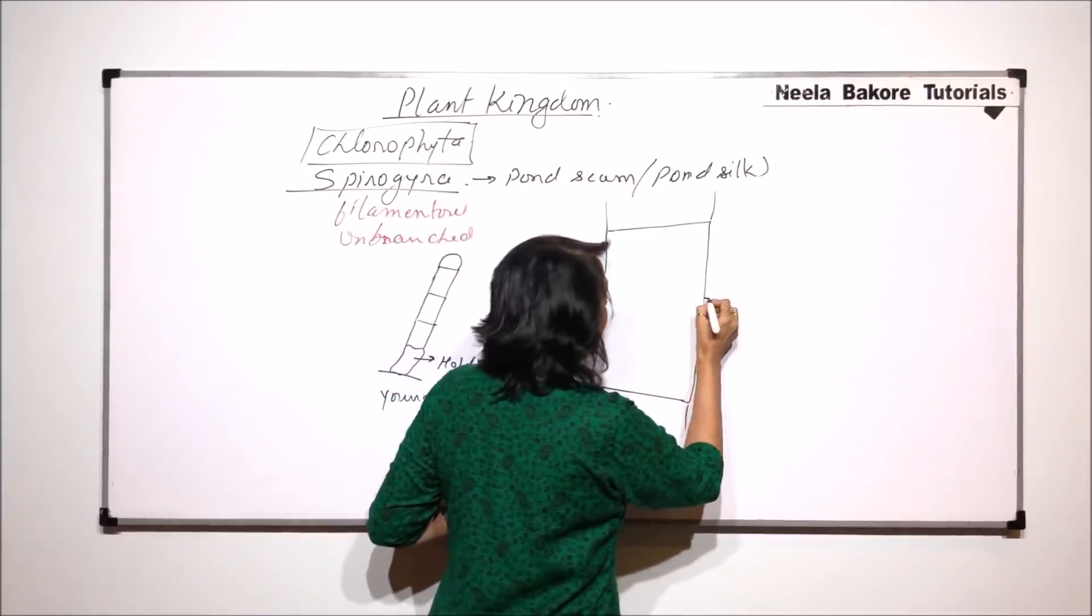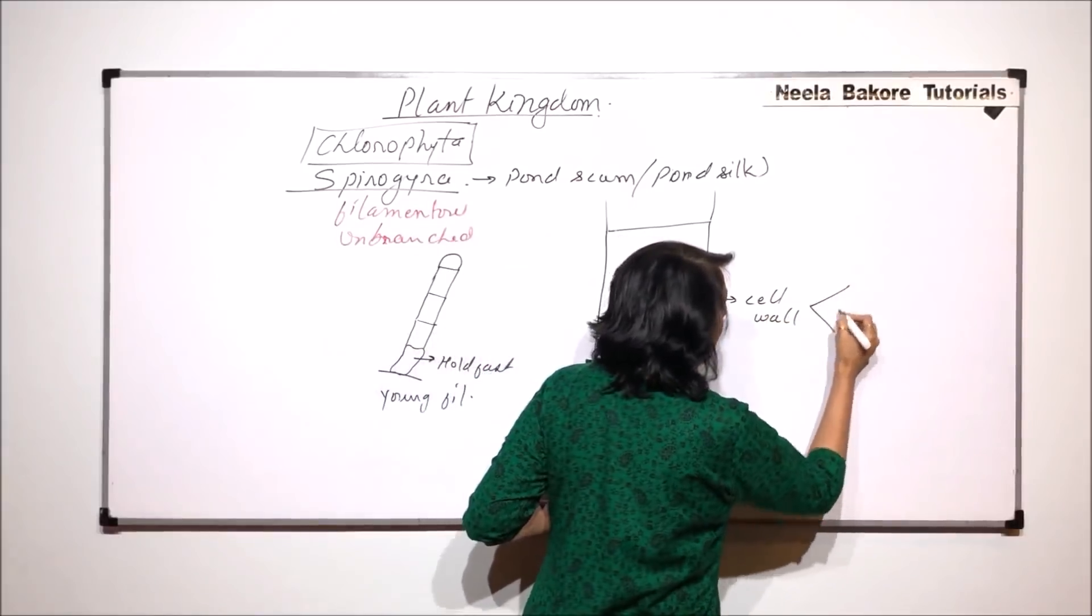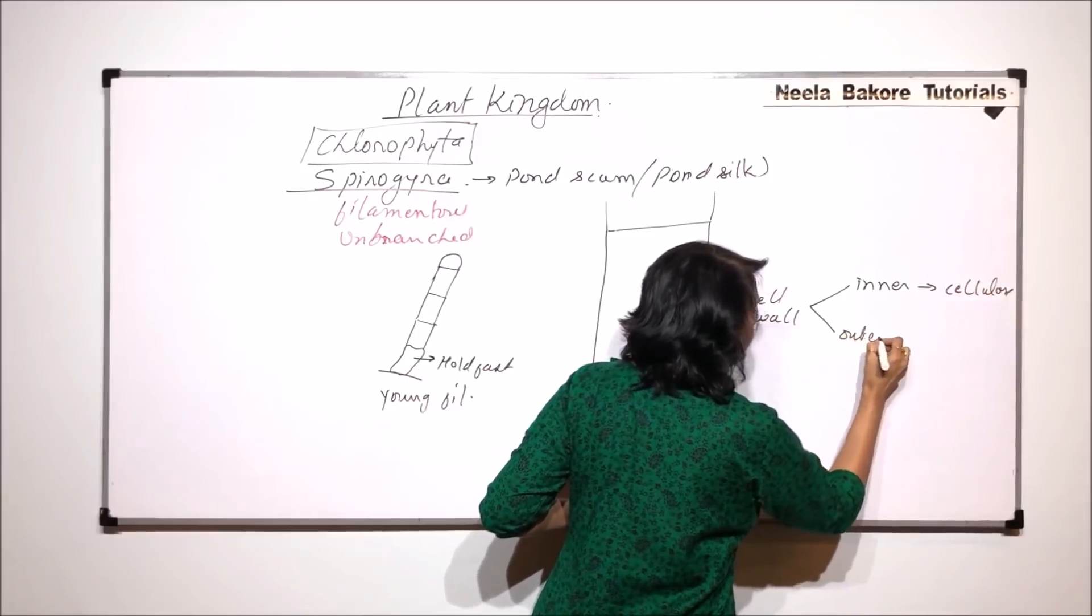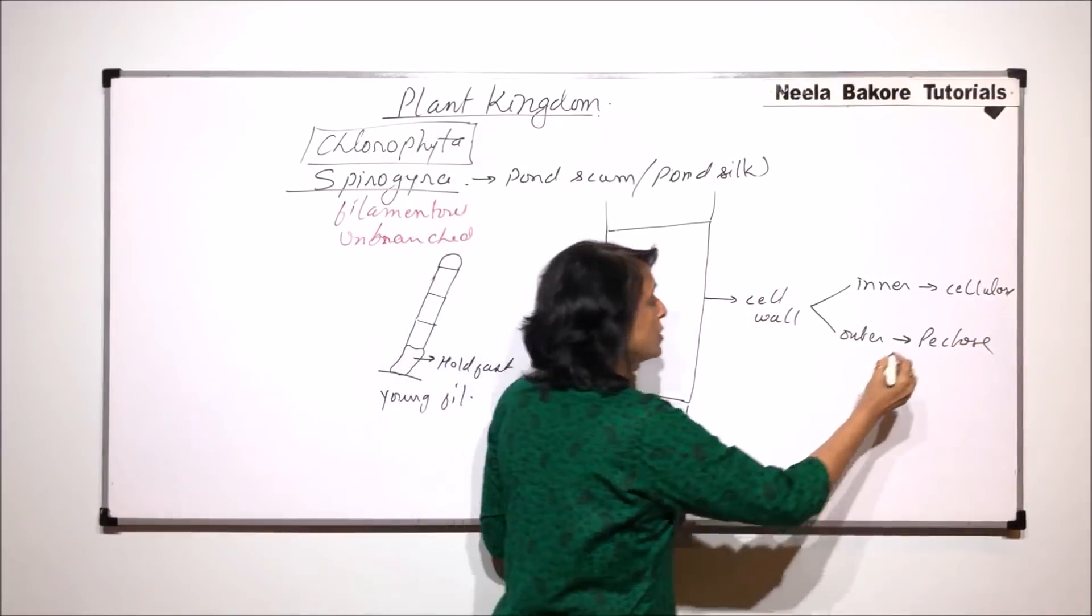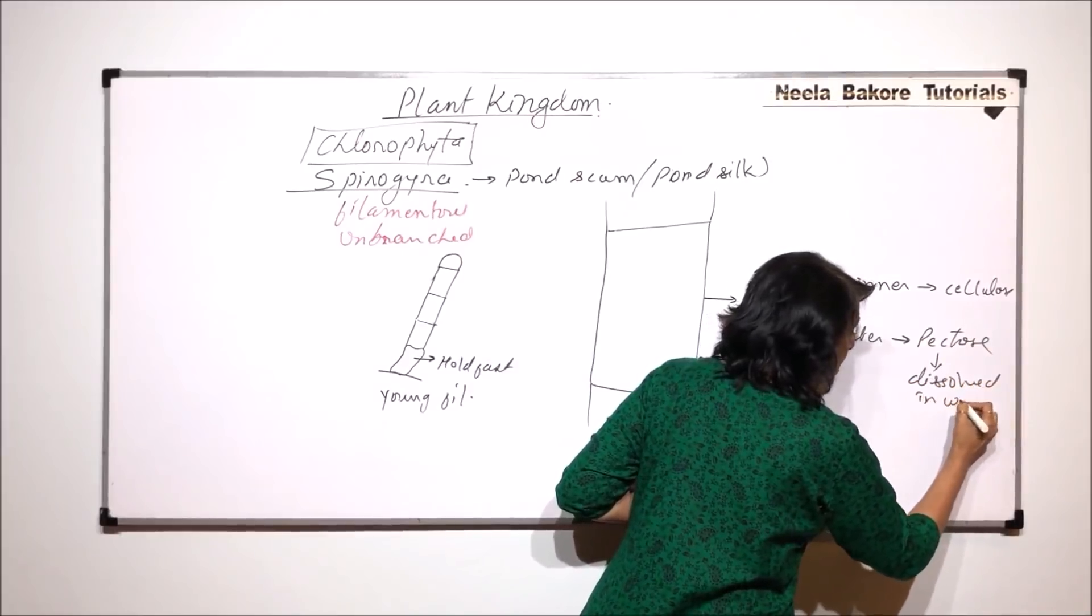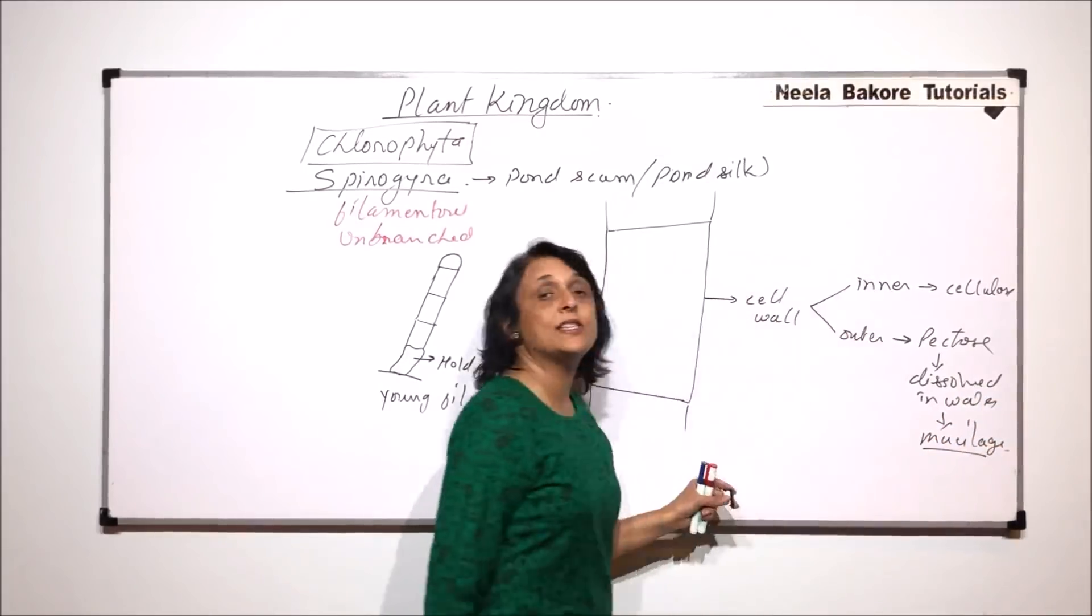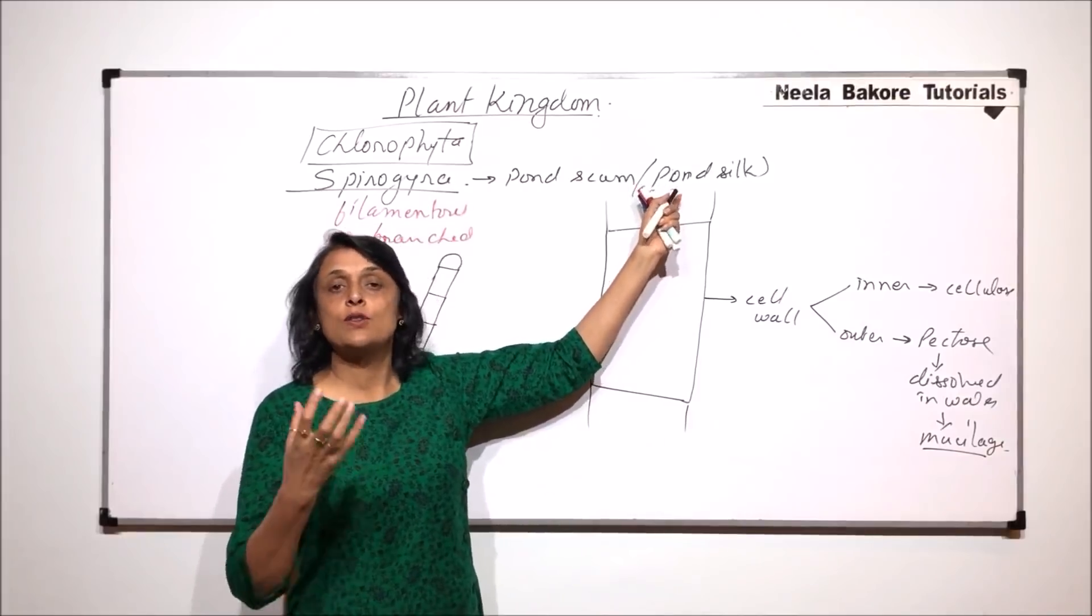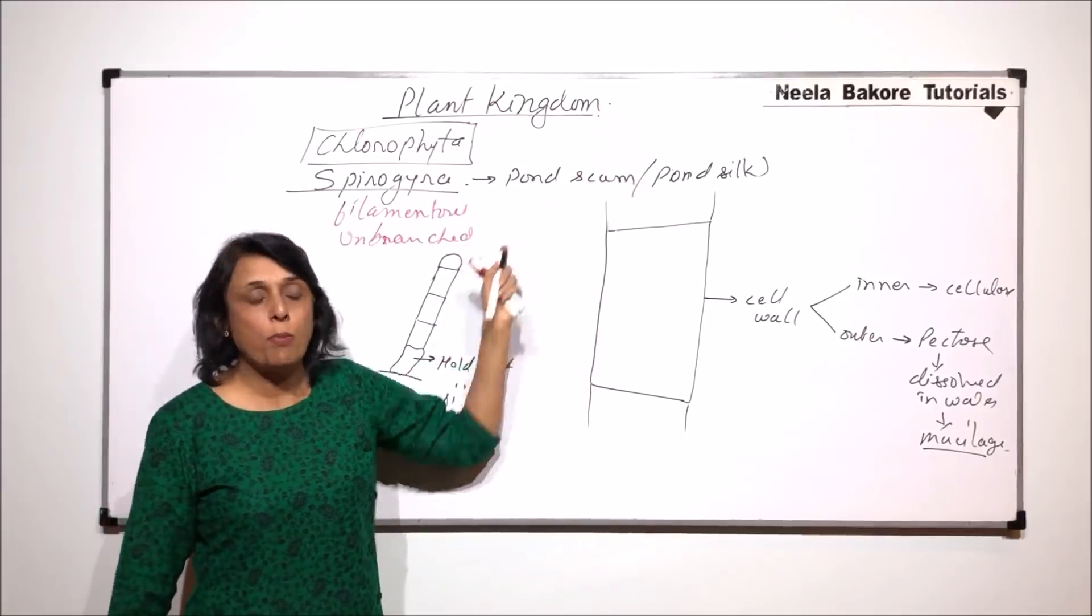The outermost layer is cell wall made up of two layers. The inner is made up of cellulose and the outer is made up of pectose. It is this pectose which dissolves in water and becomes mucilage. Now when it becomes mucilaginous, the outer surface appears very slimy and that's why it is known as pond silk. Because of all this mucilage, these filaments form the scum and that's why it is known as pond scum.